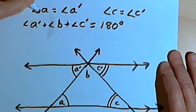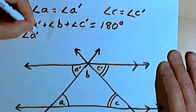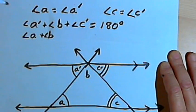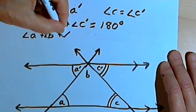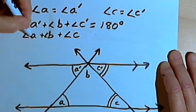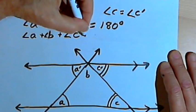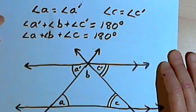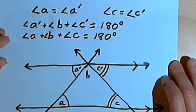And now if we replace A prime with A, we can do that because they're equal, and then we add angle B, and replace C prime with C because they're equal, and add that to it, we find that angle A plus angle B plus angle C add up to 180 degrees. So there's your proof that the three interior angles of a triangle add up to 180 degrees.